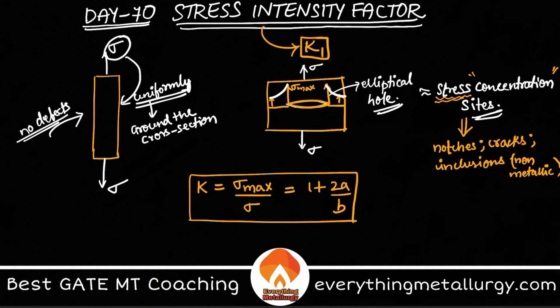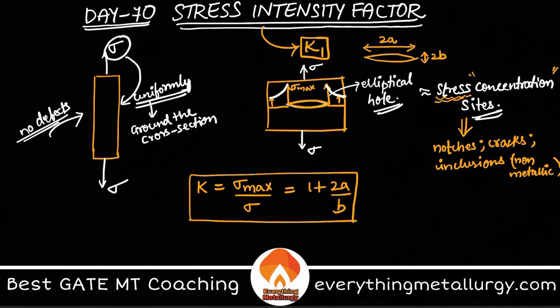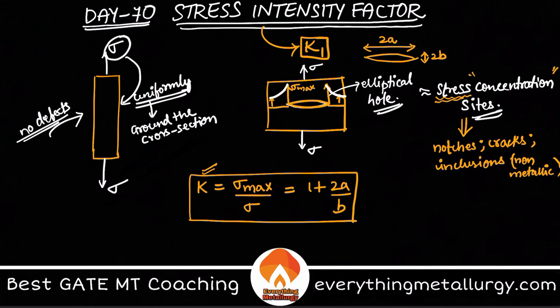Here I assumed an elliptical hole, where 2a is the major axis and 2b is the minor axis. As you can see, if you have a narrower crack then b will decrease, and because of that your stress concentration will increase. So if sigma-max increases and exceeds the fracture stress of your body, it can easily fail.